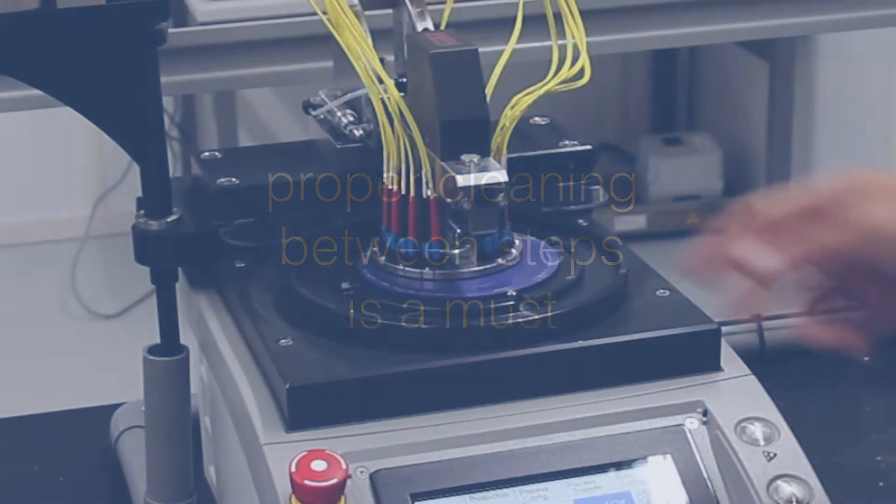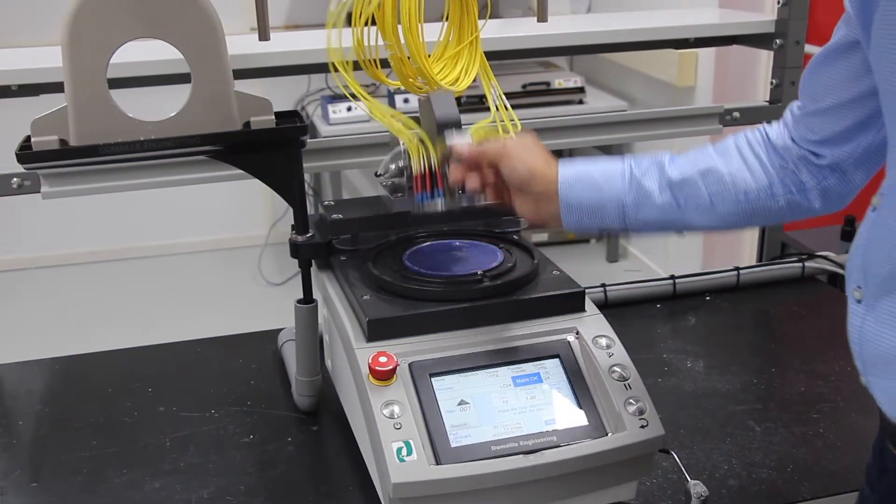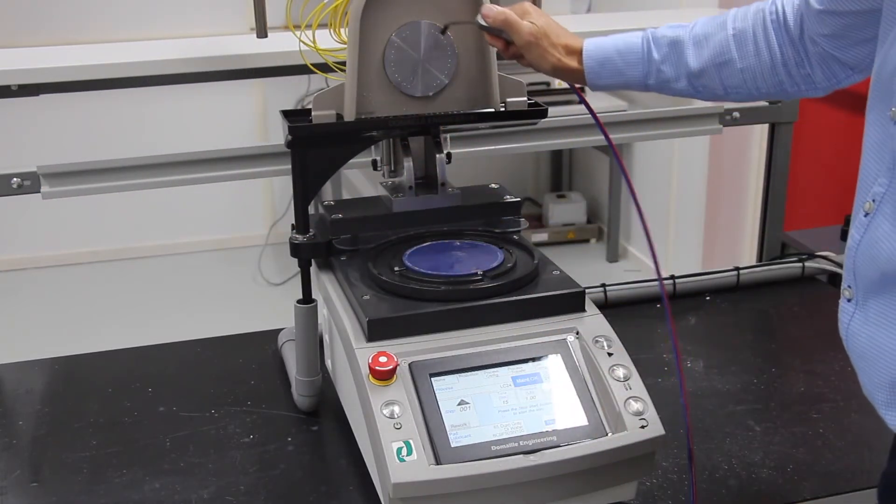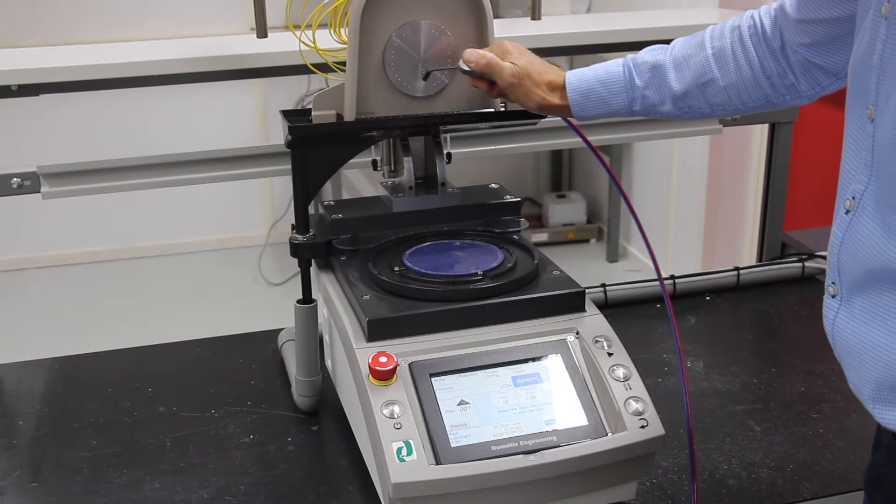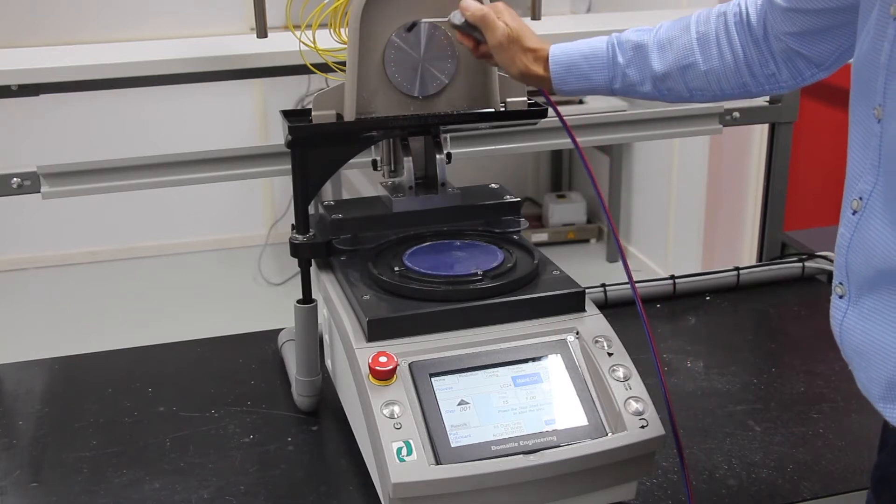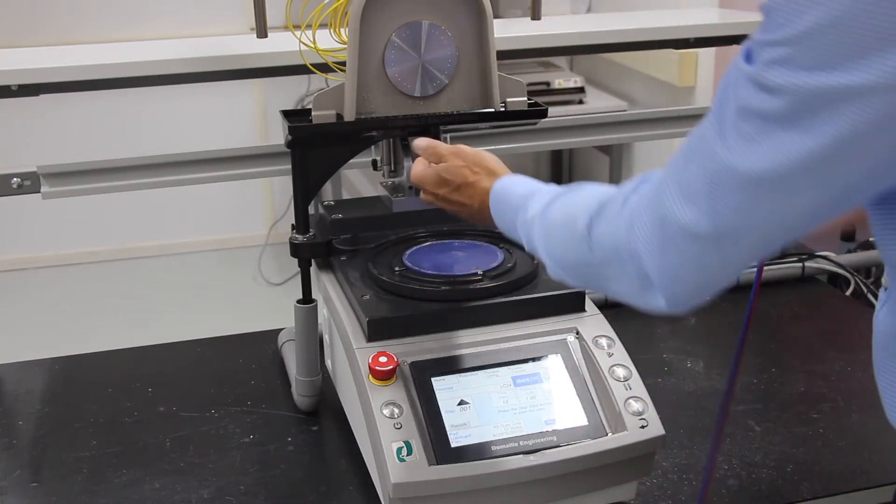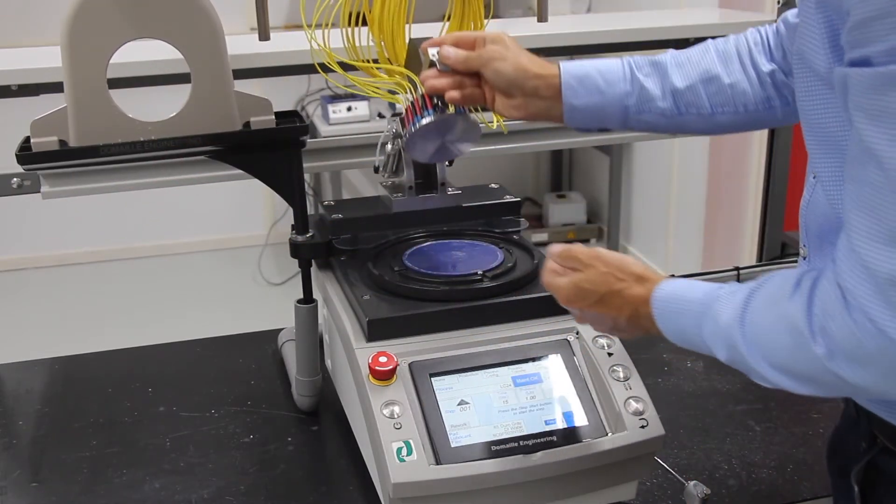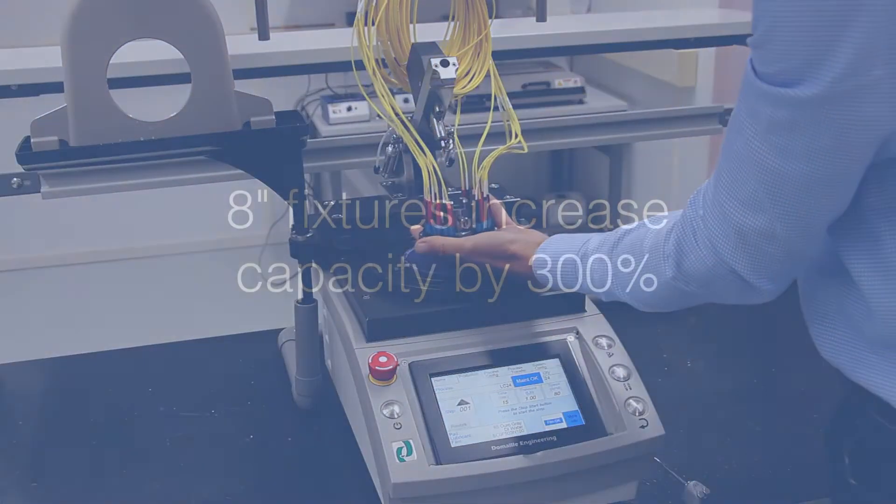Polishing processes are typically three to four steps, going from a rough to a fine polish. Proper cleaning between each step is critical. Debris must be removed before proceeding to the next polished step. Insufficient cleaning is often a root cause for cross-contamination from previous steps, resulting in scratches that require rework.